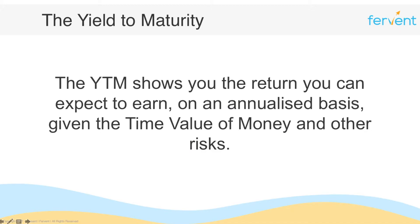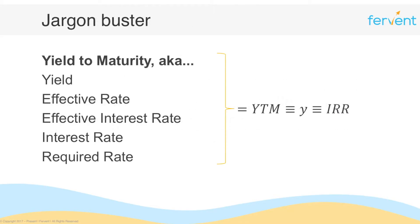In finance, we love jargon, so there's a whole host of other terms used to describe the yield: the effective rate, the effective interest rate, the interest rate itself, and finally the required rate — which we normally use from an investor's standpoint, because that's the rate they require in order to invest in a bond. Importantly, the yield is also the internal rate of return of the bond, so you could also call it the IRR. We said that this is one of the most important aspects of the yield, and you'll see why when we look at estimating the yield later on.